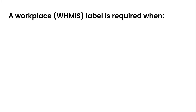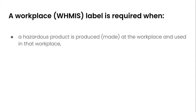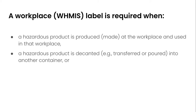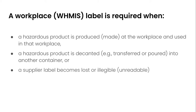So what is a WHMIS label, or a workplace label, and when is it required? A workplace label is required under three key situations. First, if a hazardous product is produced or made at the workplace — for example, if we're diluting something and using a solution in our workplace, that would be considered being made or produced. Second, if a hazardous product is decanted — transferred or poured into a new container — it would also require a label. And finally, if a supplier label becomes lost, illegible, or unreadable, then we would need to create a new workplace label.